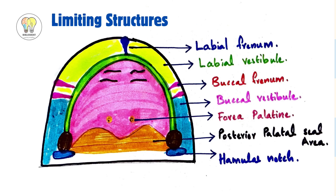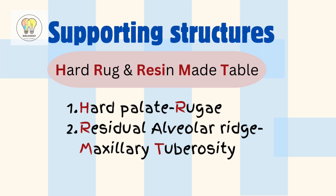Here is the diagram showing all the limiting structures, labeling labial frenum, labial vestibule, buccal frenum, buccal vestibule, fovea palatine, posterior palatal seal area, and hamular notch. Coming to supporting structures, the mnemonic is 'hard drug and resin made table.'